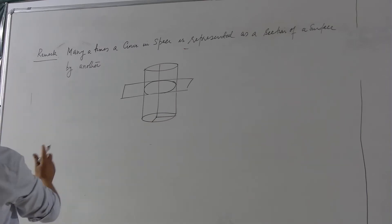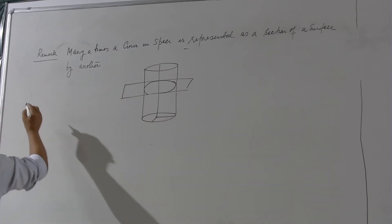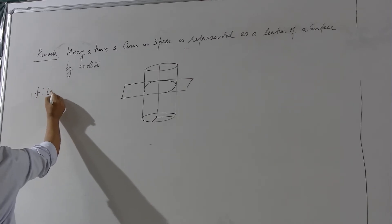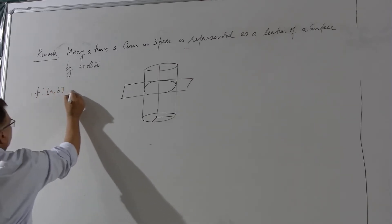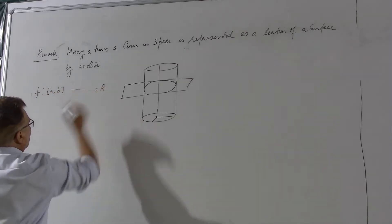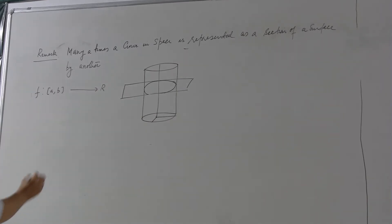So more generally, in general what happens is look here to describe the phenomena. You consider a function from an interval (a,b) into R first, and you know the graph of this function.